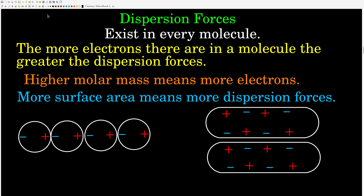The way dispersion forces come about is we have to think about the electron cloud in a molecule or atom as something that's not static — it's moving and shifting all the time. The electron density shifts around constantly, so at any given instant, there's likely to be some region of electron density that's denser in a molecule than another region, meaning a slight negative charge in the denser region and a slight positive charge in the less dense region. Then it changes instantaneously.